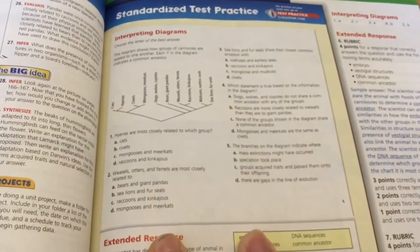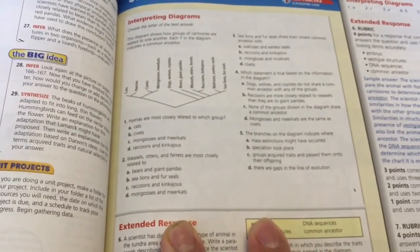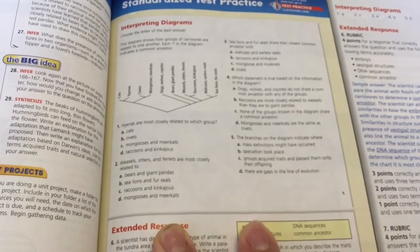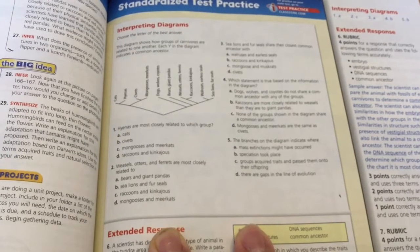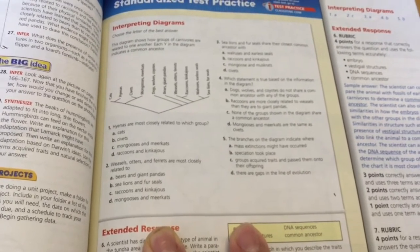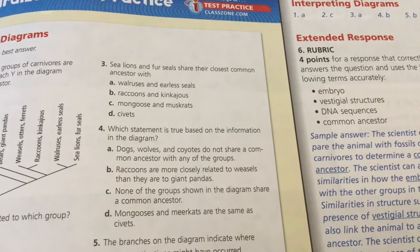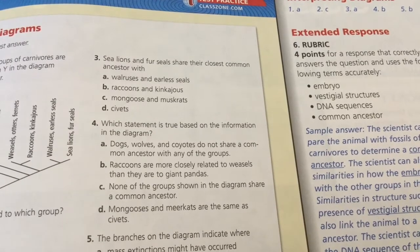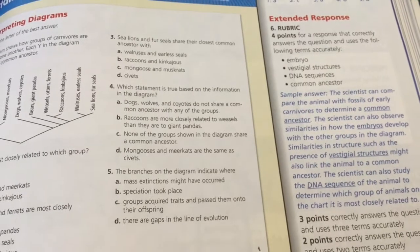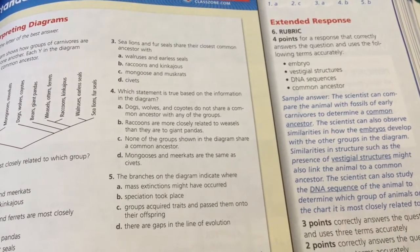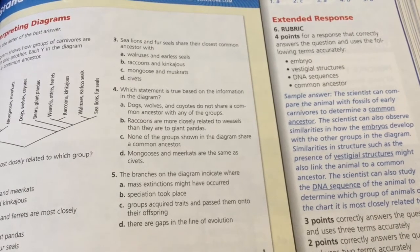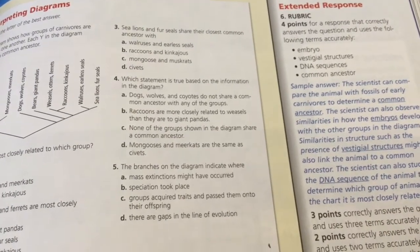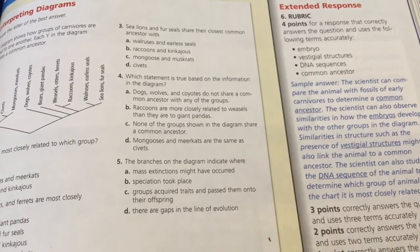Now using the cladogram: Hyenas are most closely related to A, cats. Weasels, otters, and ferrets are most closely related to C, raccoons and kinkajous. Raccoons and fur seals share their closest common ancestor with walruses and earless seals. Which statement is true? B, raccoons are more closely related to weasels than they are to giant pandas. The branches in the diagram indicate where B, speciation took place.